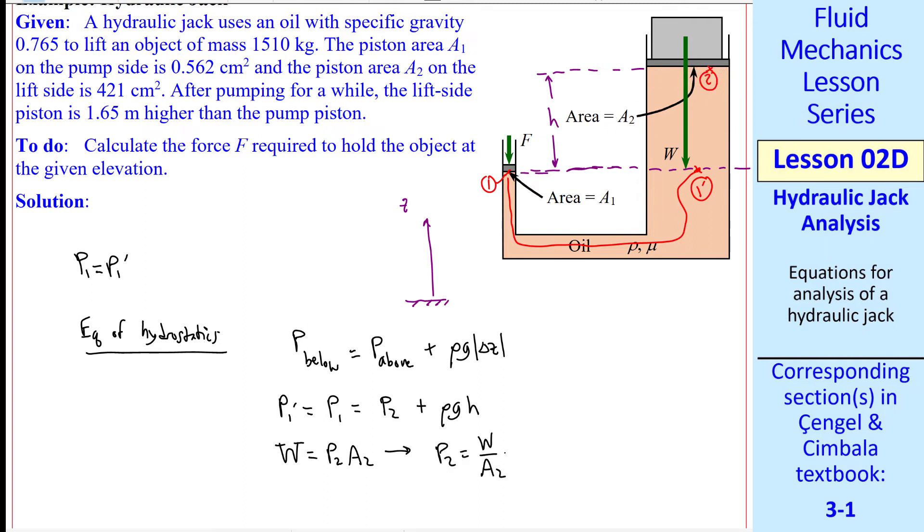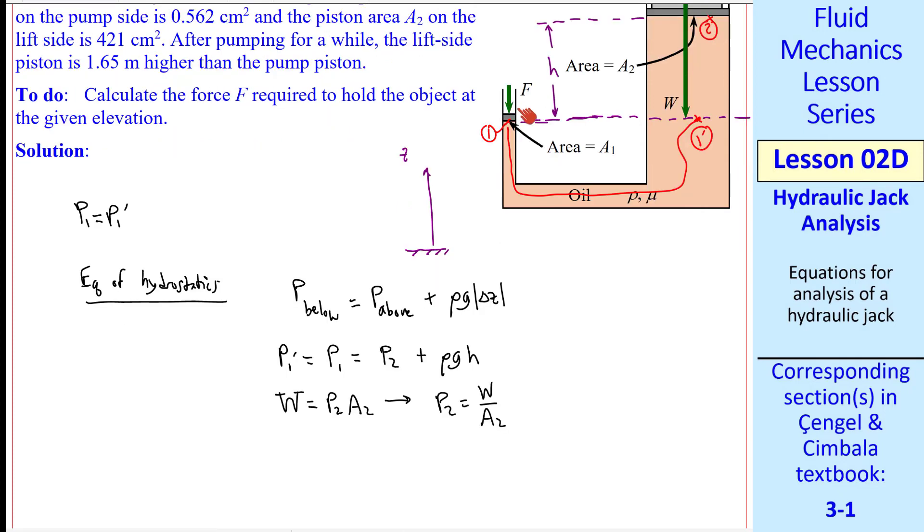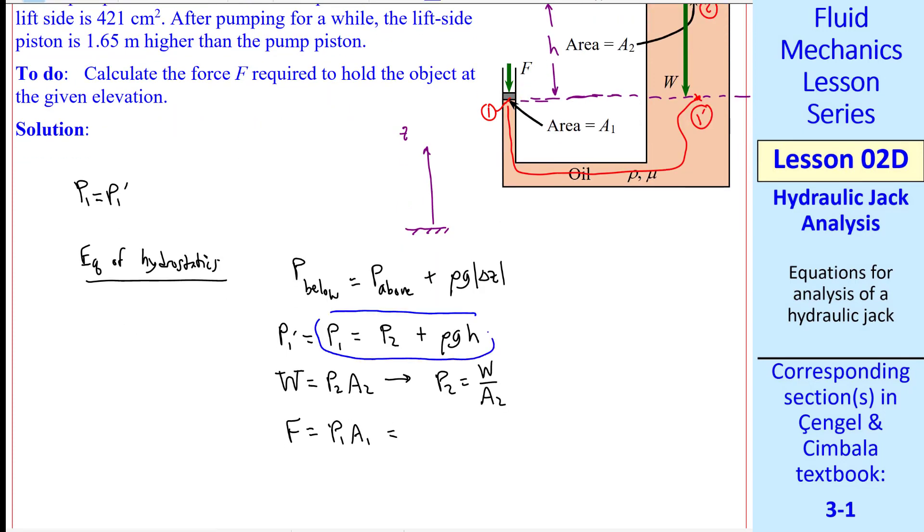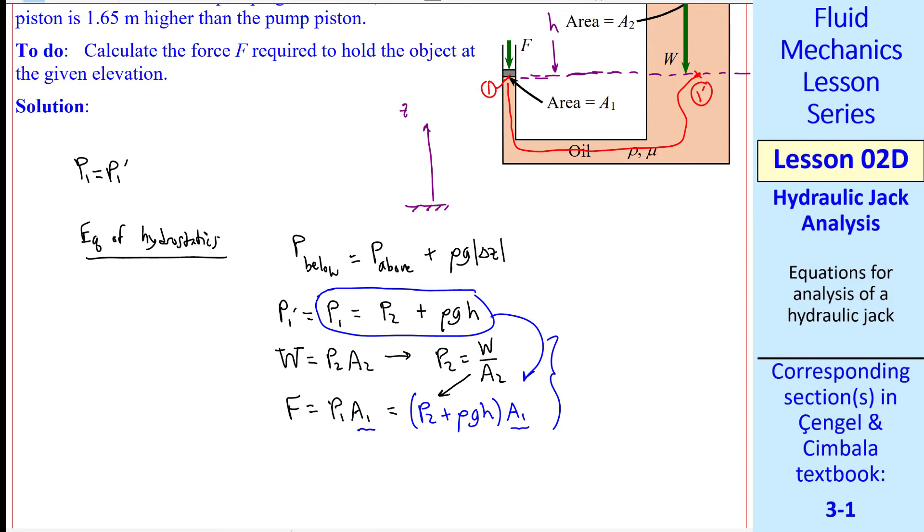Weight W is equal to P2 times A2, the area of this piston on the right side. Therefore, P2 is W over A2. And the force F on the right side is equal to P1 A1, which from here is equal to P2 plus rho GH times A1. We plug in this for P2 and solve for F. We get F equal W over A2 plus rho GH times A1.